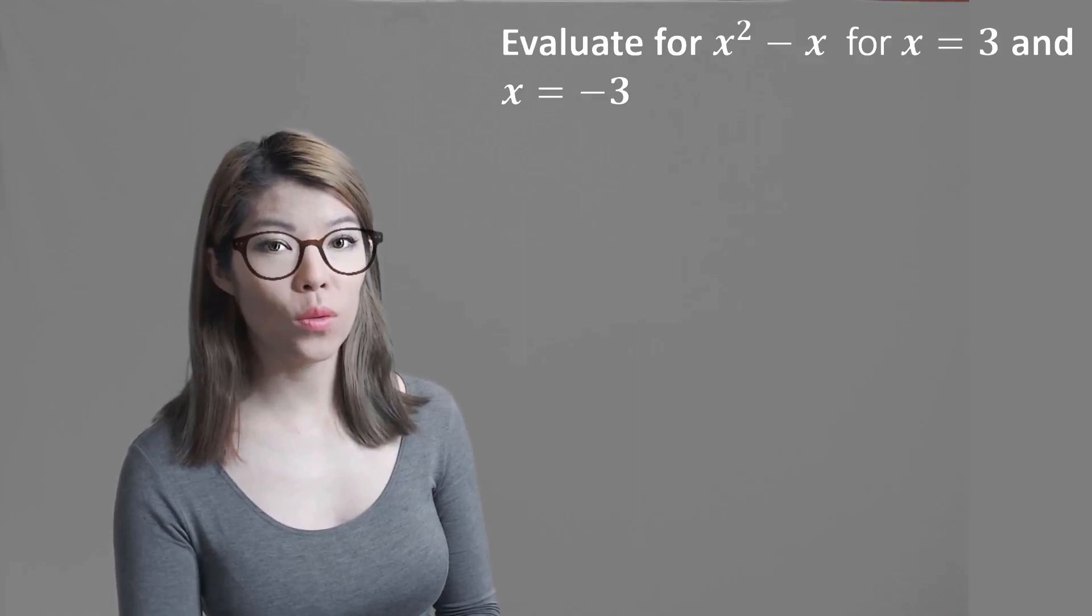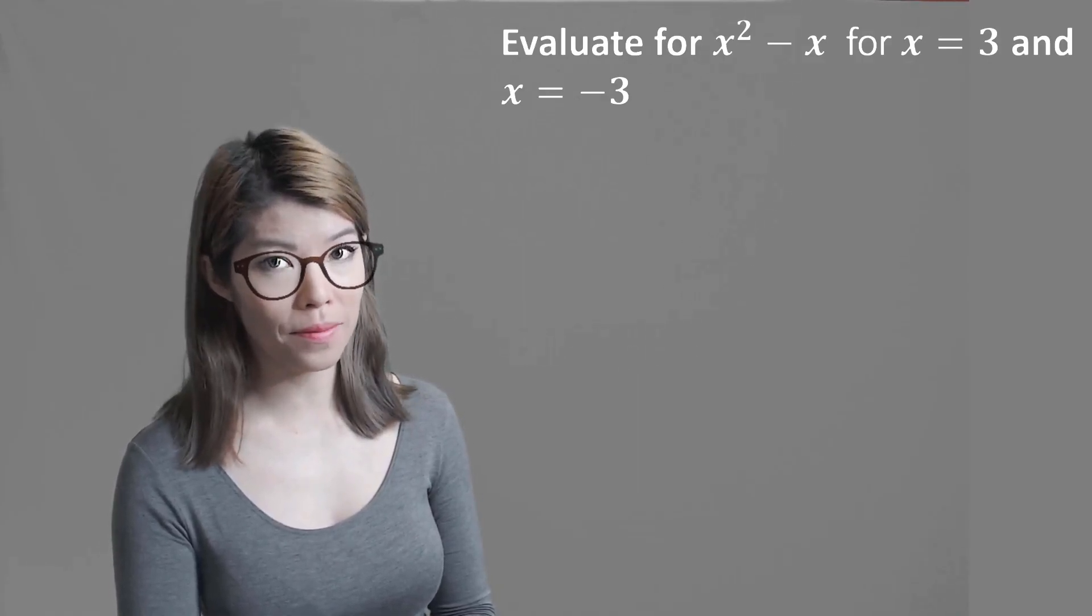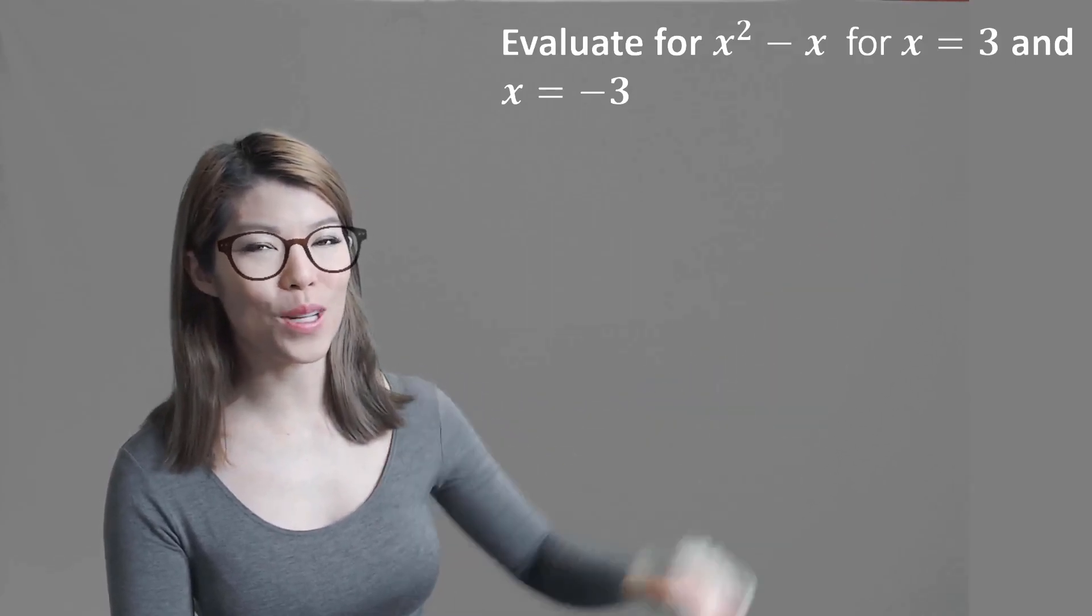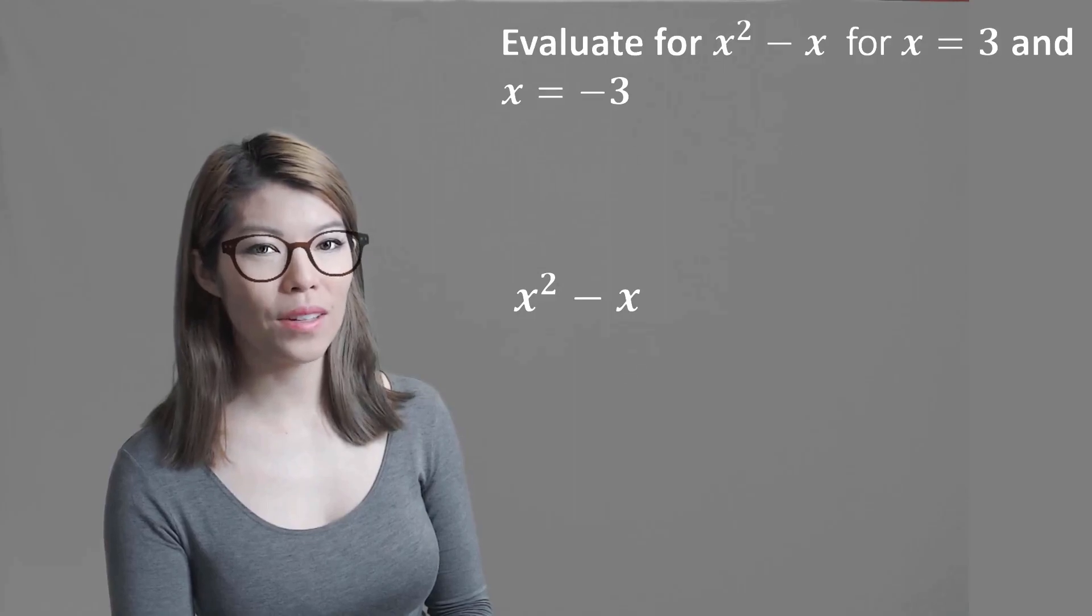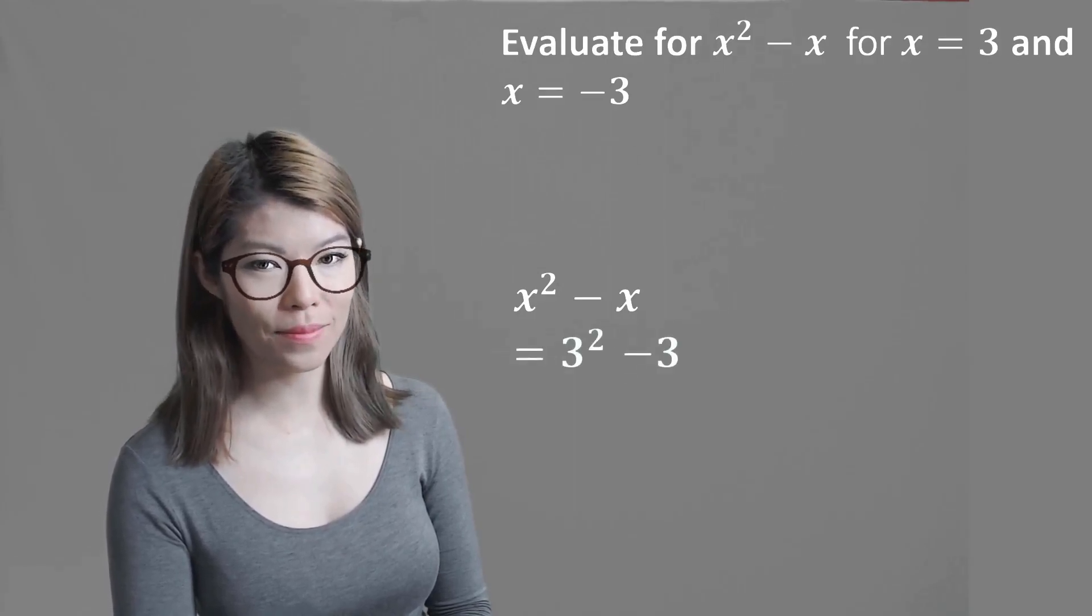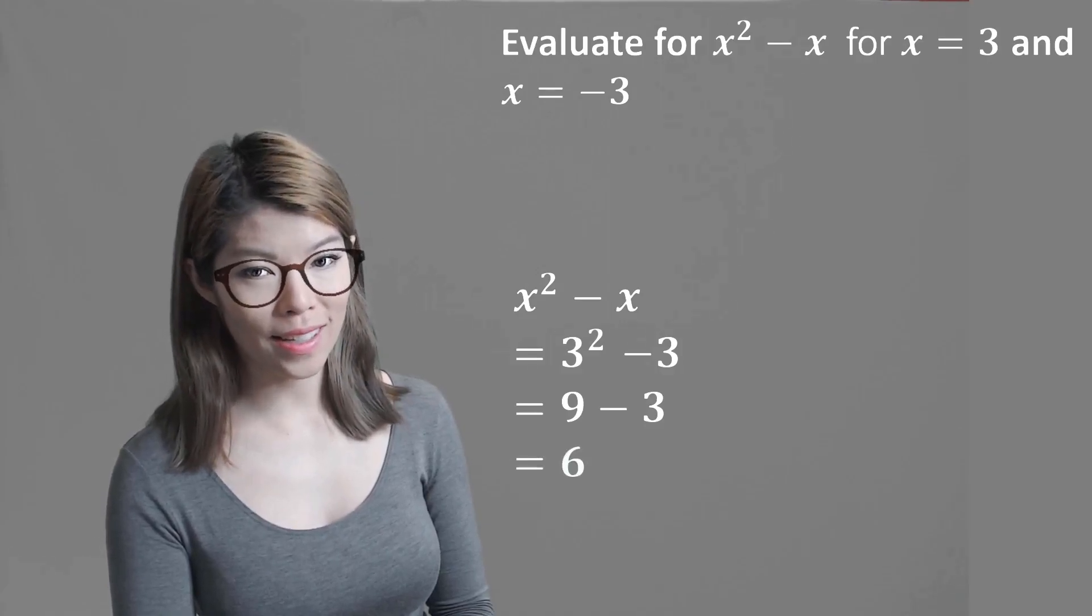Let's try this one. Evaluate for x squared minus x for x equals 3 and x is minus 3. Let's do the easy one first and do the x equals 3. So x squared minus x, we write down the 3 wherever we see x, and then 3 squared is 9 and 9 minus 3 is 6.